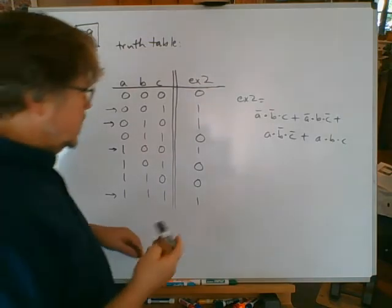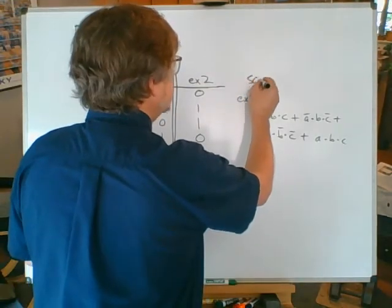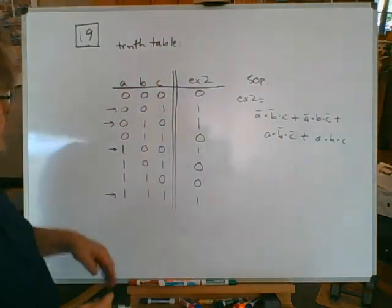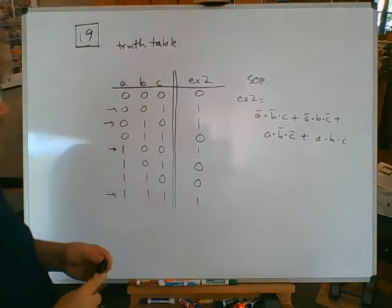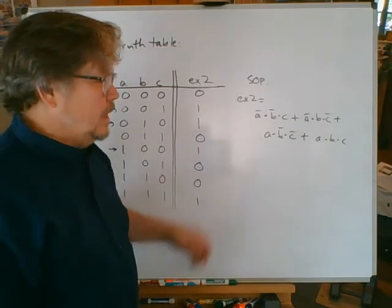That's the canonical sum of products, SOP, sum of products. And it's canonical because it's in the right order. You got all that from the last video. Now I got a formula I could use for an example.